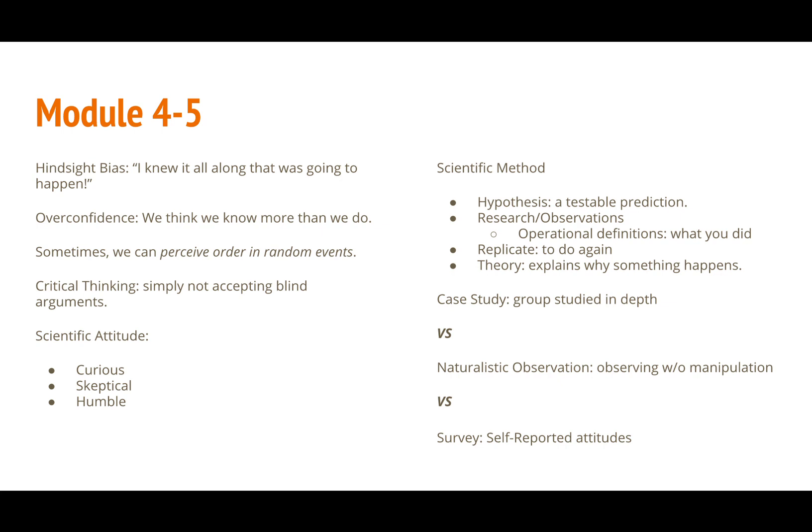Naturalistic observation is where the researcher observes without manipulating the subjects. You are able to avoid artificial lab situations but you also have less control.